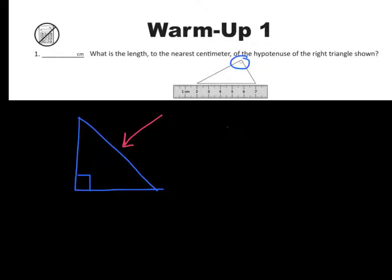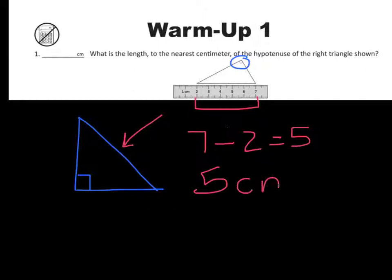Now in our problem they have given us a ruler and we measure from the two centimeter mark over to the seven centimeters. Don't make the mistake of saying oh it's seven centimeters long. It's not. We started measurements from the two. So seven minus two equals five. So our answer is five centimeters. Make sure you don't forget to put your units.